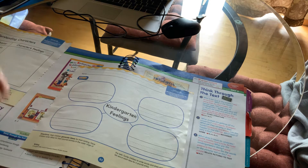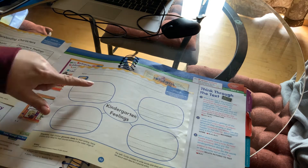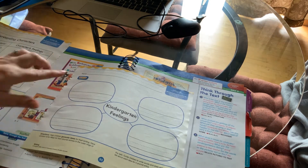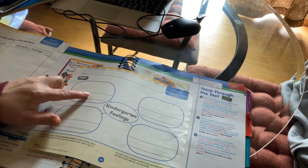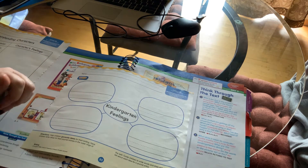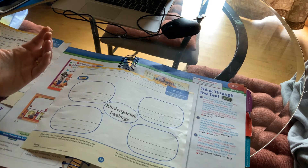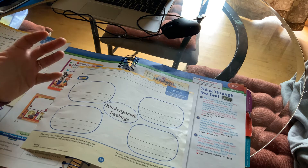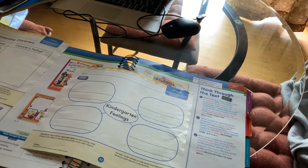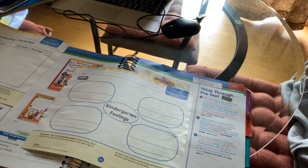So I'm going to read the story, and you're going to fill in and draw a picture. Then you're going to write the word of what the kindergartners felt during this time. The story is called Miss Bendergarden Celebrates the Last Day of Kindergarten.